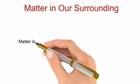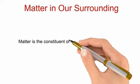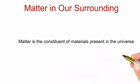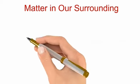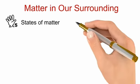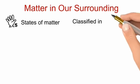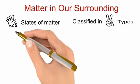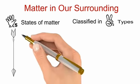Matter in our surrounding. First of all we will discuss what is matter. Matter is the constituent of particles present in our universe. It can be found in five states which can be further classified in two types.